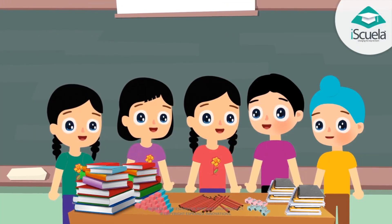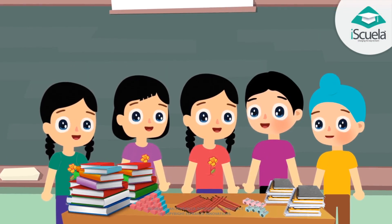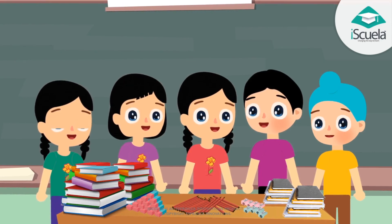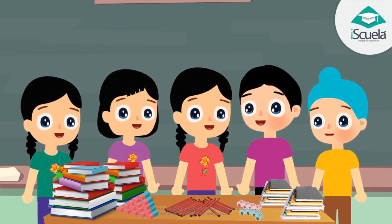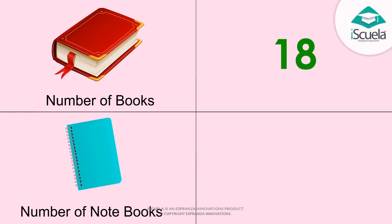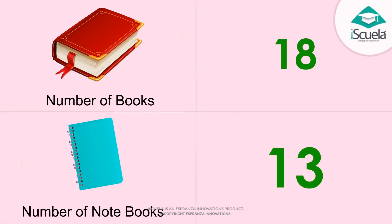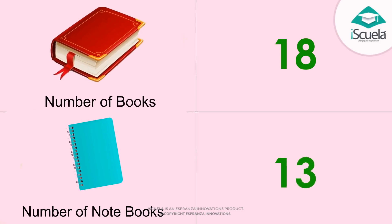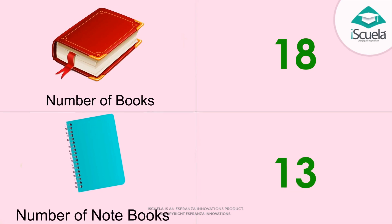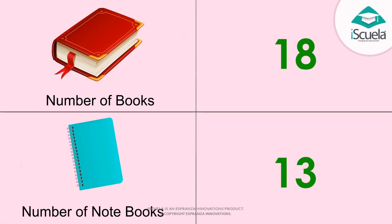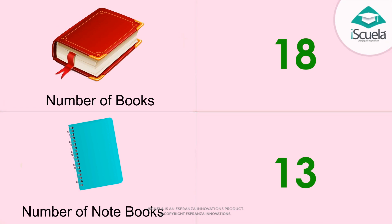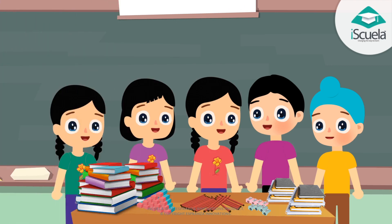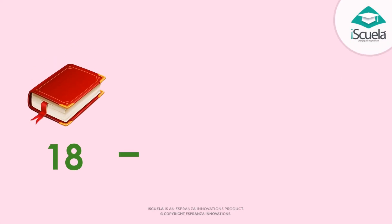Well done. Dear children, all of you must have counted the number of pencils, erasers and sharpeners. Let me ask you their numbers one by one. First of all, tell me the number of books. It's 18. And the number of notebooks? It's 13. Wow, that's great. Now, out of the number of books and notebooks, which is more? The number of books is more. Well done, superb. Now, what number of books is more than the notebooks? 18 minus 13 is equal to 5.